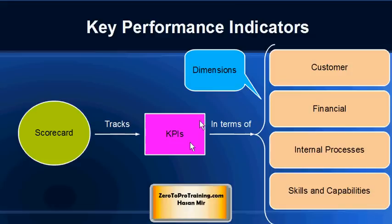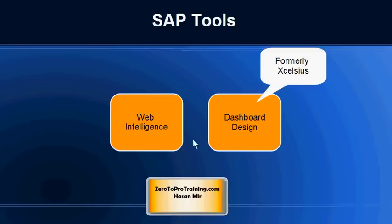Key performance indicators track business activities in multiple dimensions, including customer, financial, internal processes, and skills and capabilities. SAP offers various tools to create dashboards, including Web Intelligence and Dashboard Design. Through Dashboard Design, you can create interactive dashboards.